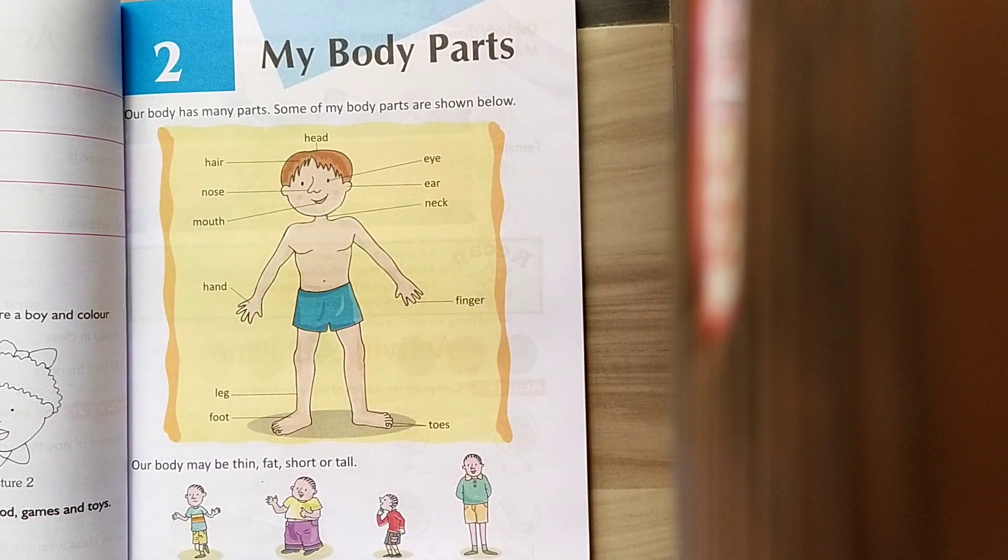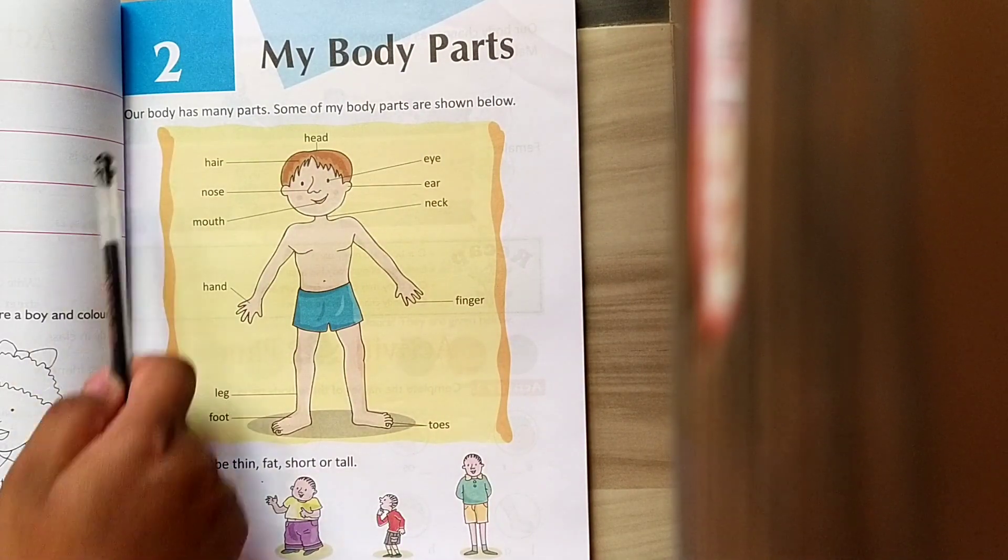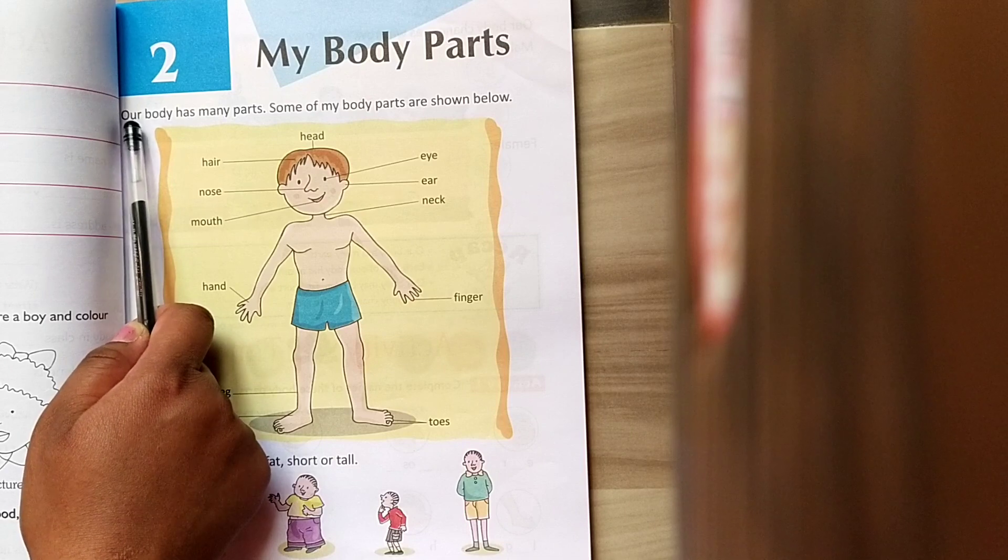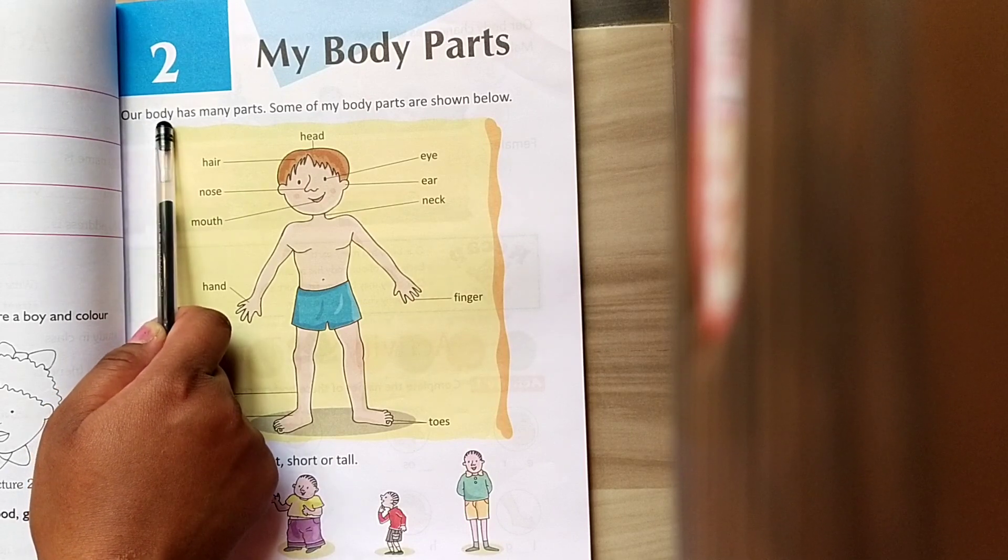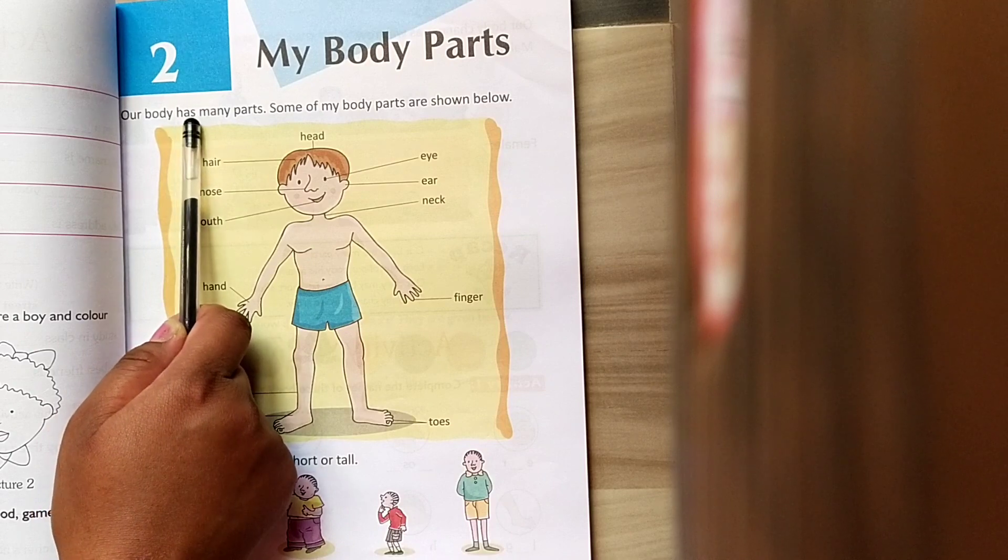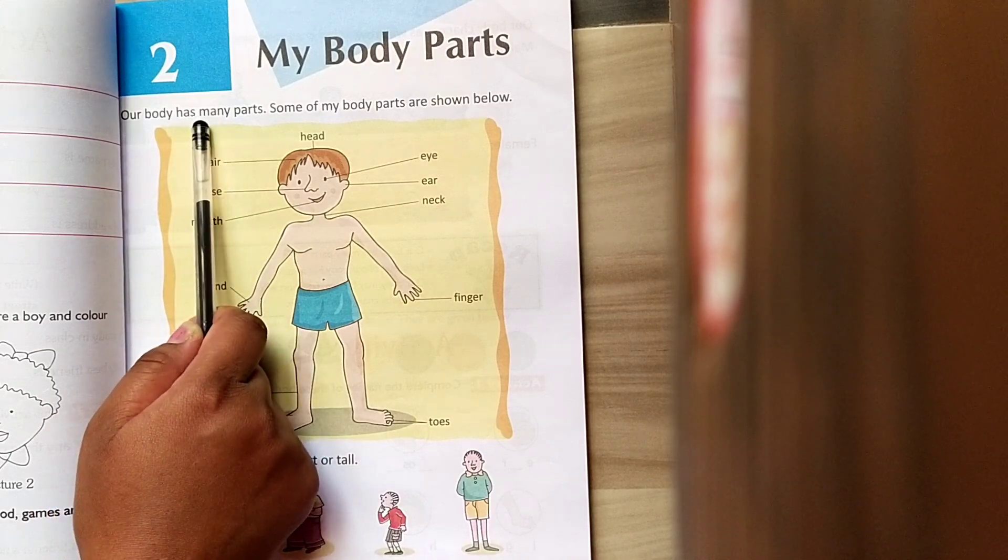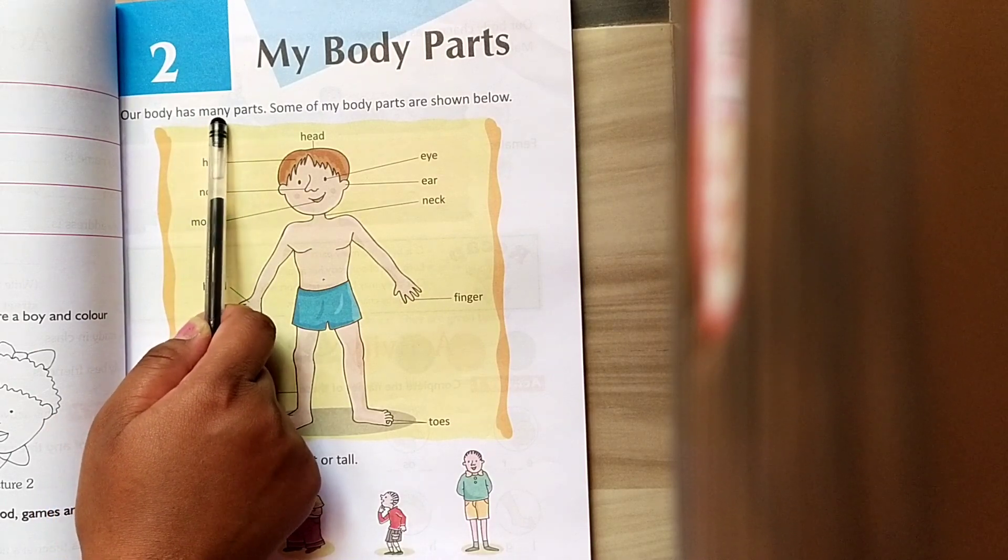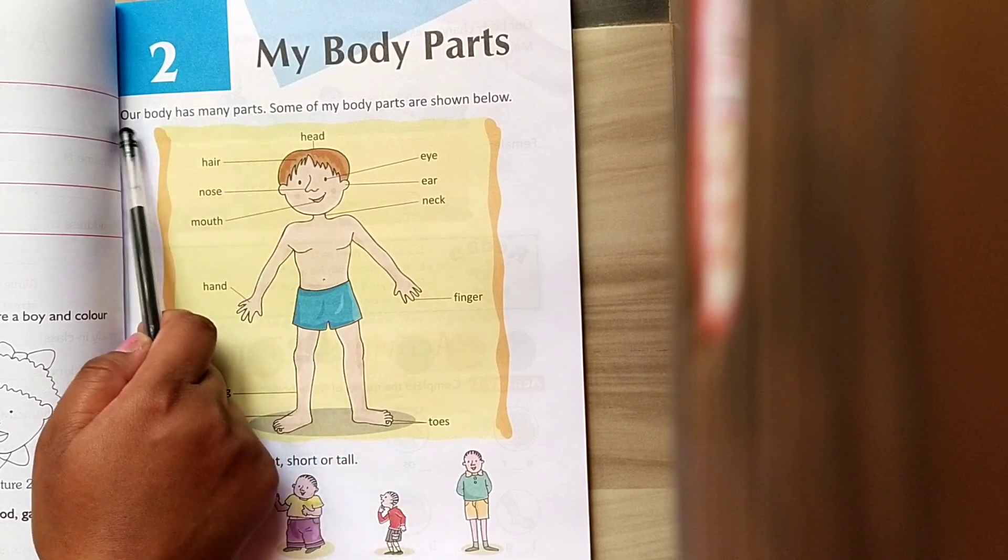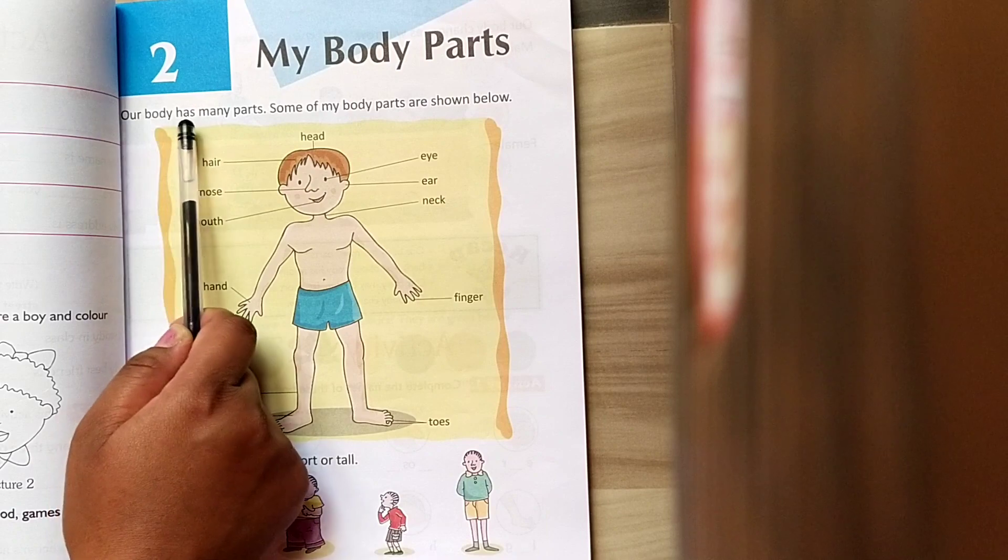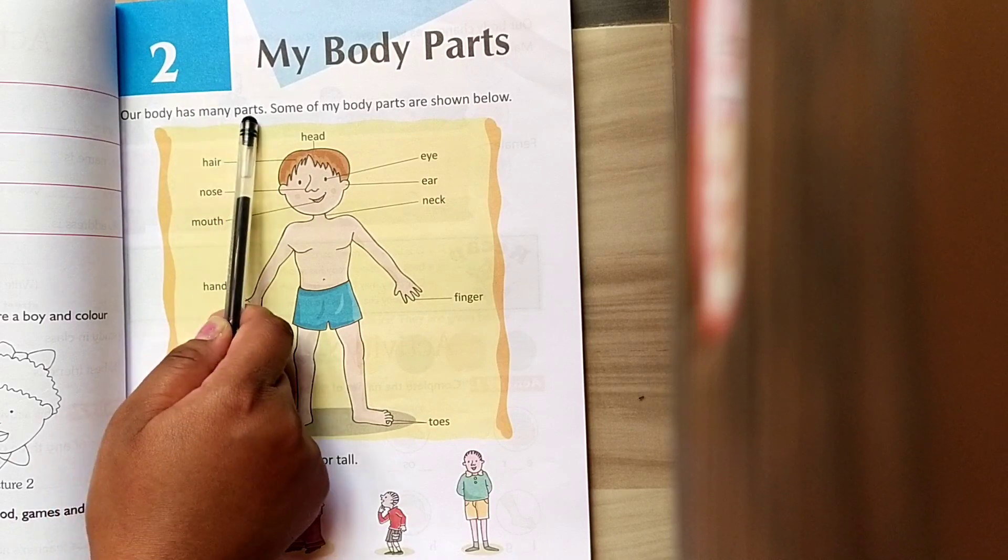Now, start reading after me. O-U-R-R, B-O-D-Y, Body, H-A-S, Has, M-A-N-Y, Many, P-A-R-T-S, Parts. Our body has many parts.